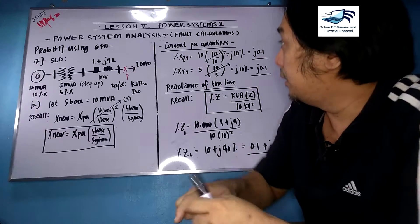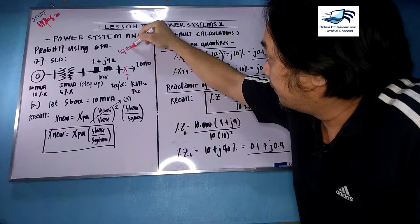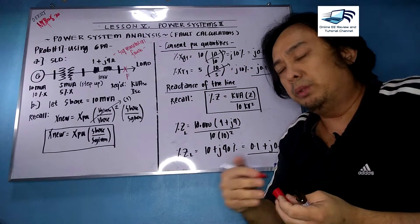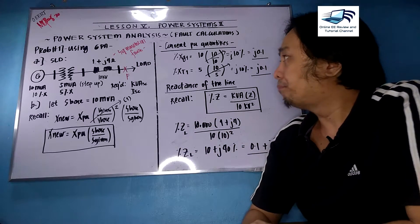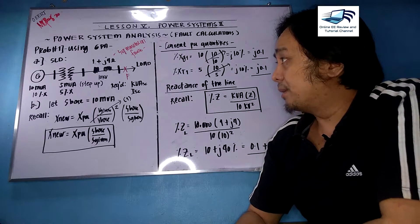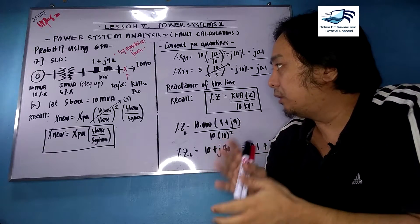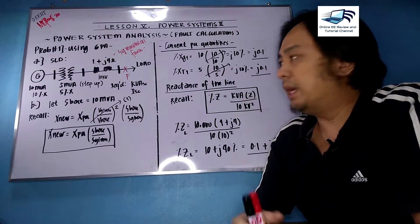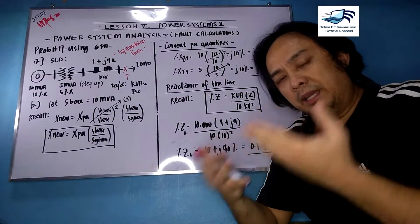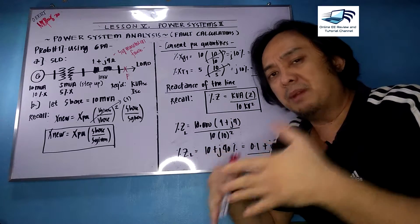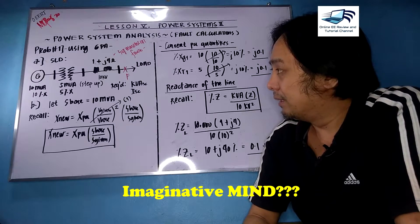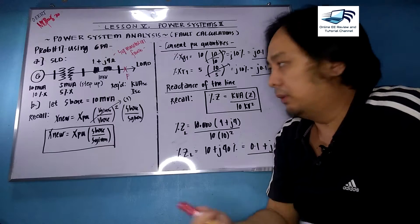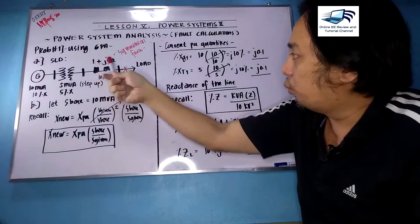This problem is under the three-phase fault or symmetrical fault, and it is a true power system because it is already loaded. To solve this, you can revisit the six-point algorithm from the past lesson. The six-point algorithm is divided into six sections or parts. Since the problem doesn't have any single line diagram, you must have an imaginative mind to foresee what type of system it is. Based on the problem we read, this is the single line diagram with the 10 kV line having an impedance of 1 + j4 ohms.